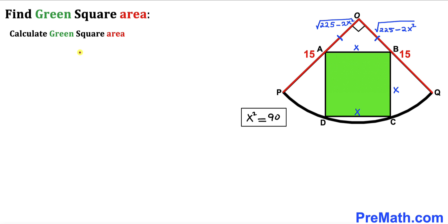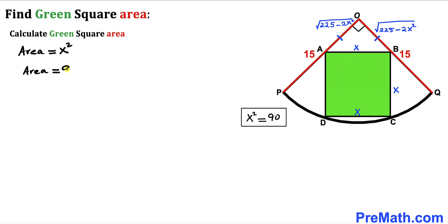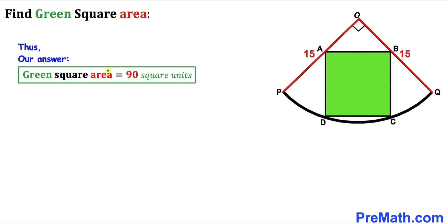For the final step, let's calculate the area of the green shaded square. Recalling the area formula: Area = S², where S is the side length. In our case the side length is X, so Area = X² = 90. Therefore the area of green shaded square ABCD is 90 square units. Thanks for watching and please don't forget to subscribe to my channel for more exciting videos.